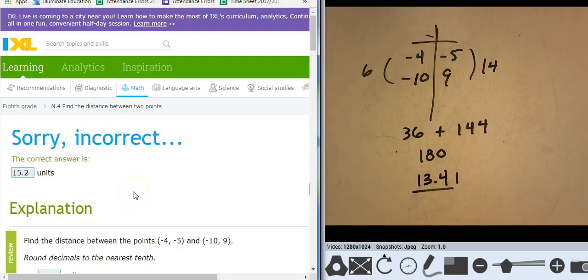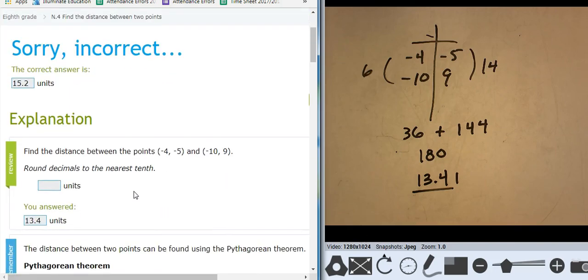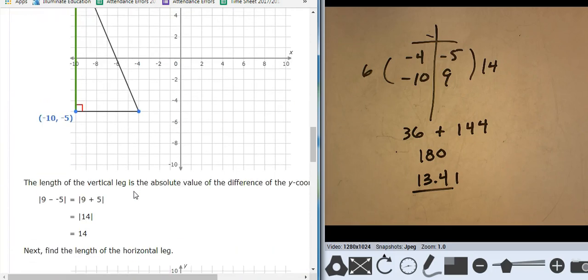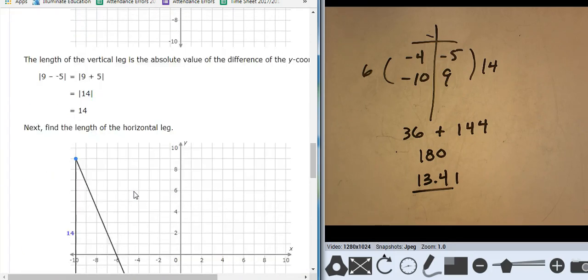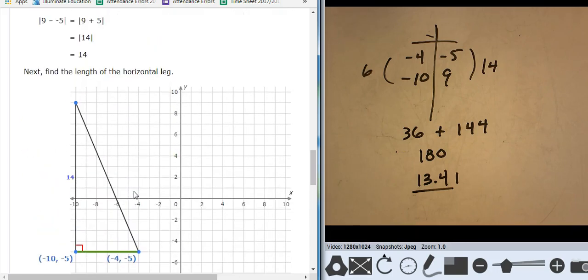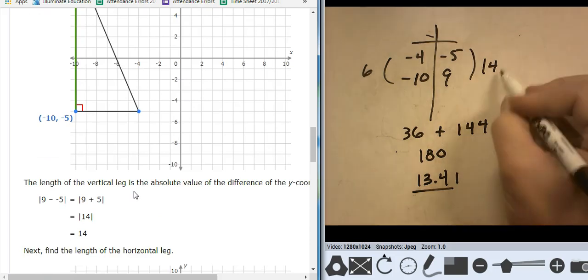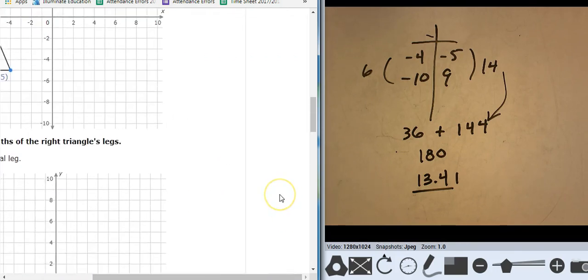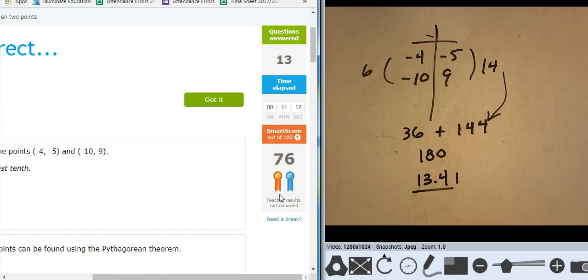Whoa, 15.2. Whoa. Come on, Barr. 14, 6. Oh, I see what I did. Do you see what I did? It's right there. I said 14 squared is 144. You were probably yelling at the computer right then, weren't you? Mr. Barr, no, don't do it. Oh, my goodness. How's my smart score? Okay. I'm doing all right. 11 minutes.